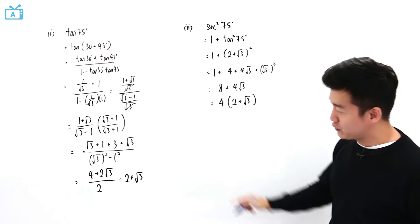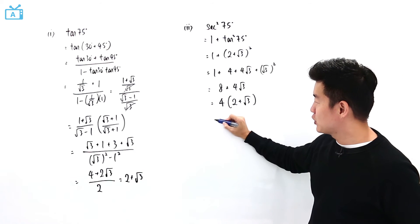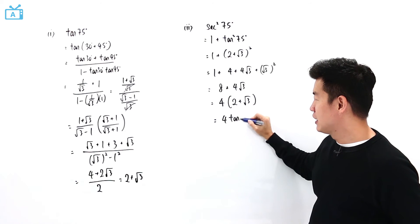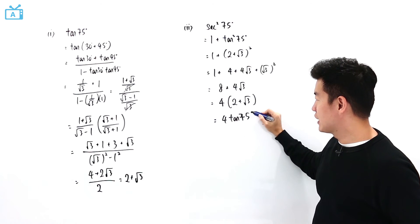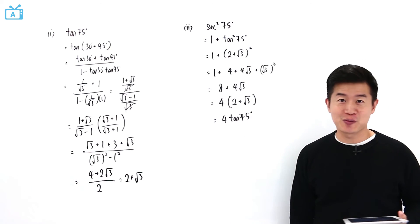And what is 2 plus square root of 3? It is tangent 75 degrees. So what we have here is 4 tangent 75 degrees, which is what the question wants us to show.